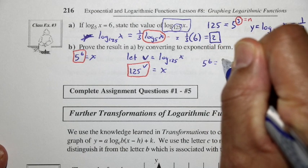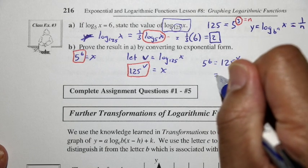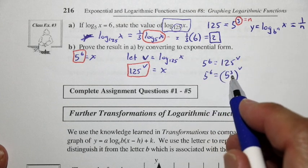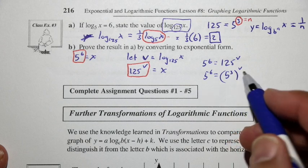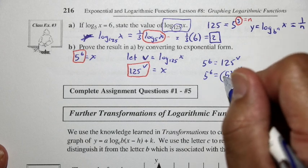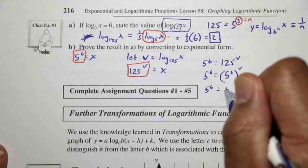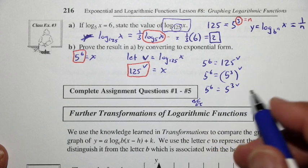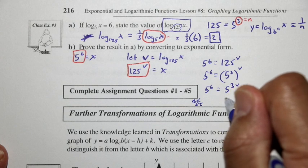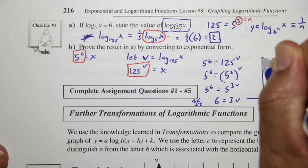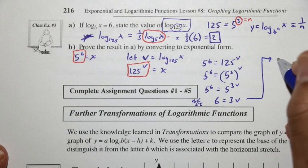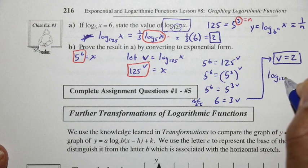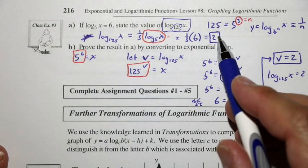Since both expressions equal x, we can say 5 to the 6 equals 125 to the v. And 125 can be thought of as 5 cubed, so we have 5 to the 6 equals 5 to the 3v. If the bases are equal in two equal powers, then the exponents must be equal — so 6 equals 3v, meaning v equals 6 divided by 3, which is 2. So log base 125 of x equals 2, confirming what we found.